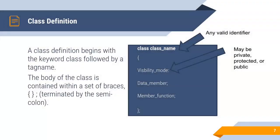Class definition. How to define a class. A class definition begins with the keyword class followed by a tag name. A tag name must be a valid identifier name. And you know the rules of the identifier naming convention.